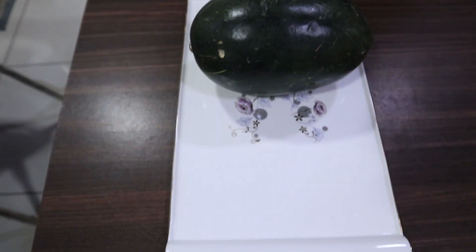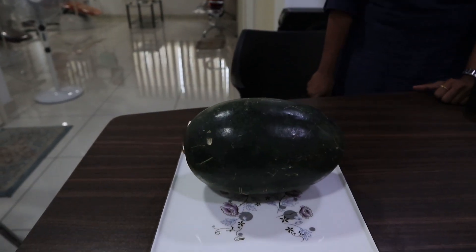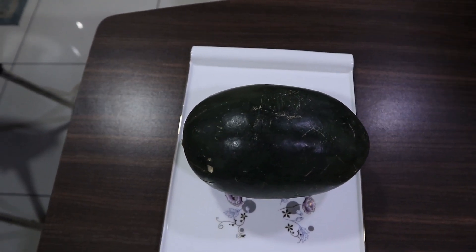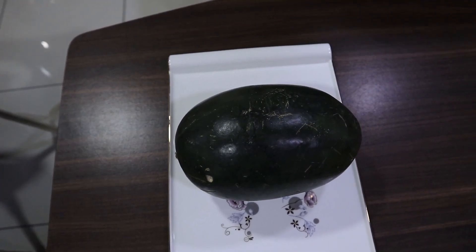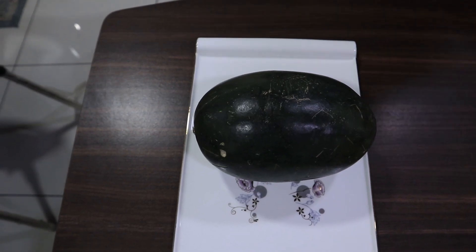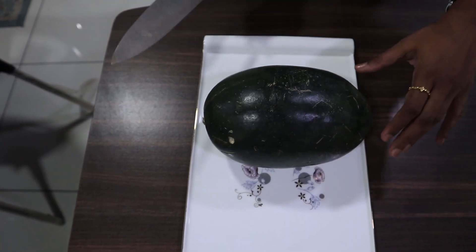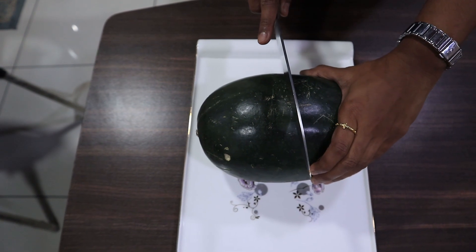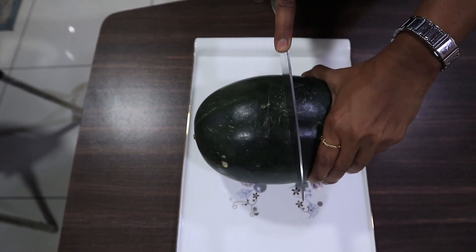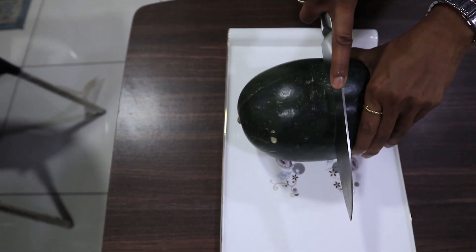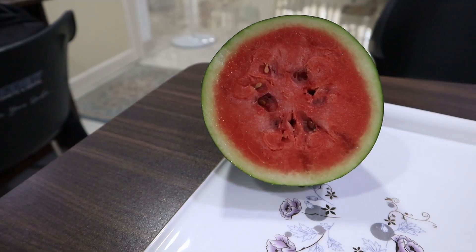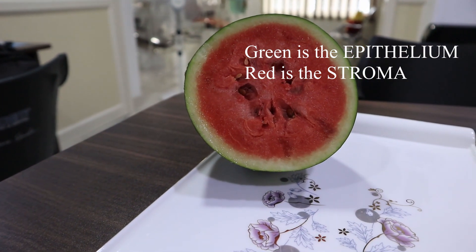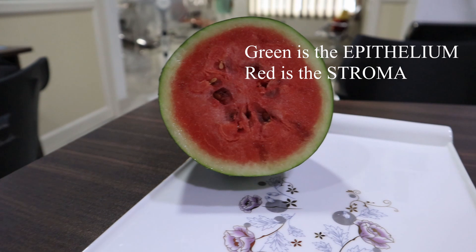Sometimes the covering might be a continuation of the skin. Sometimes it might have projections; sometimes it might have ulcerations. Now to actually study the lesion, we need to know what is inside it. To know what is inside the lesion, we are going to cut it open. Now while cutting open the lesion, we can see what is really inside the entire lesion.